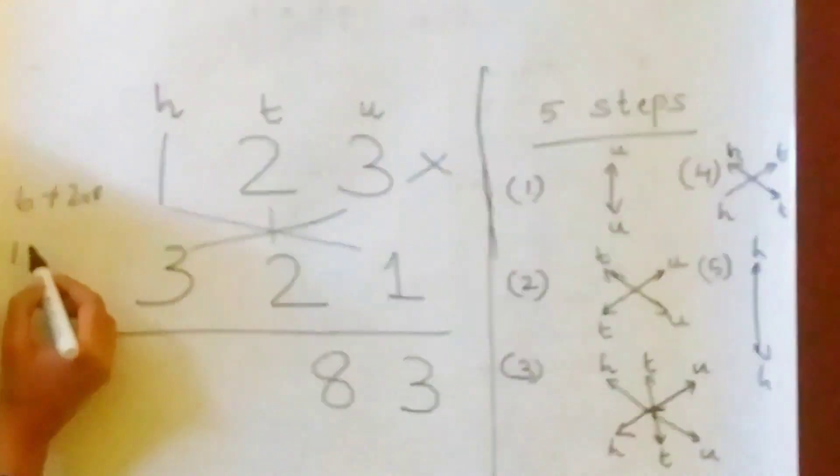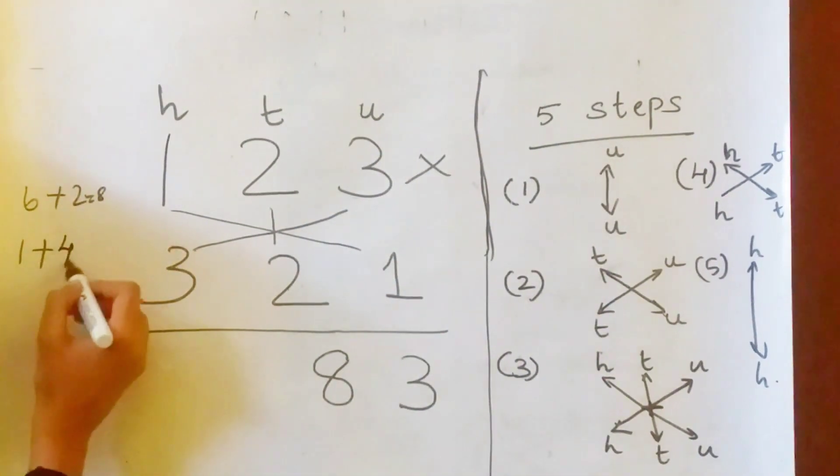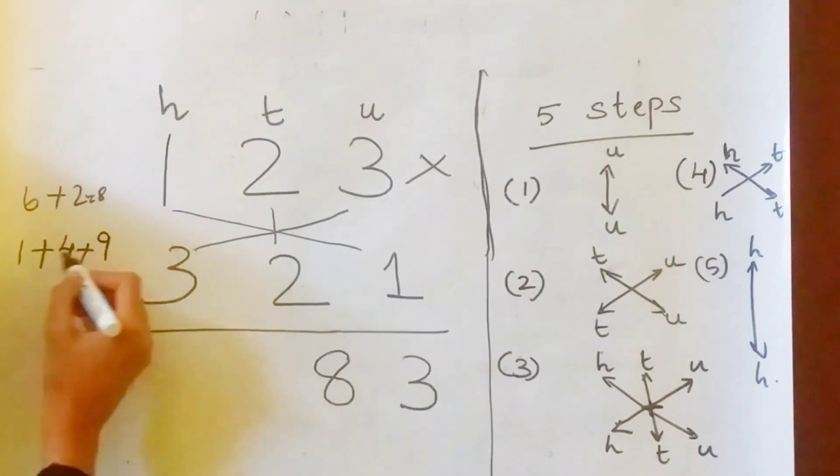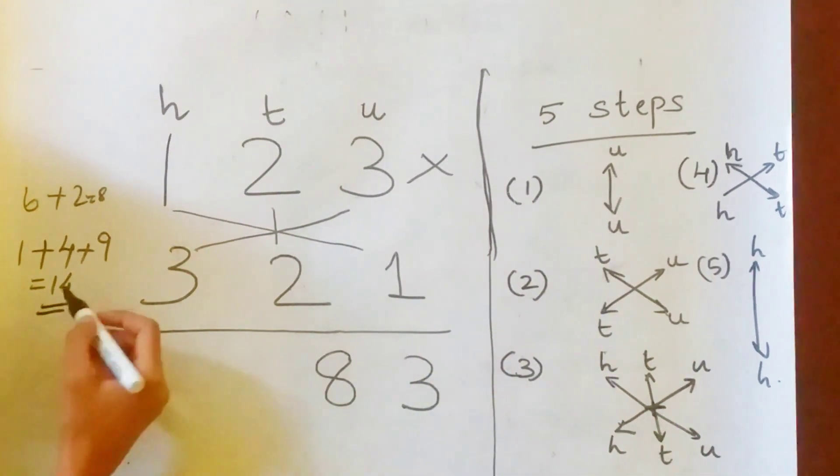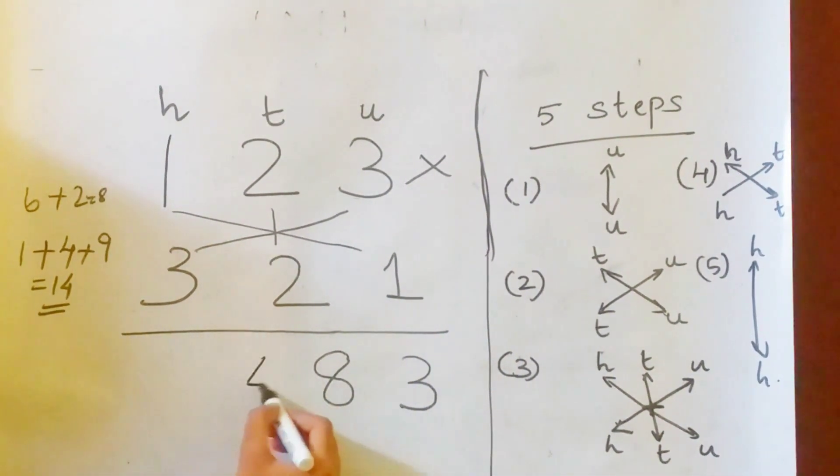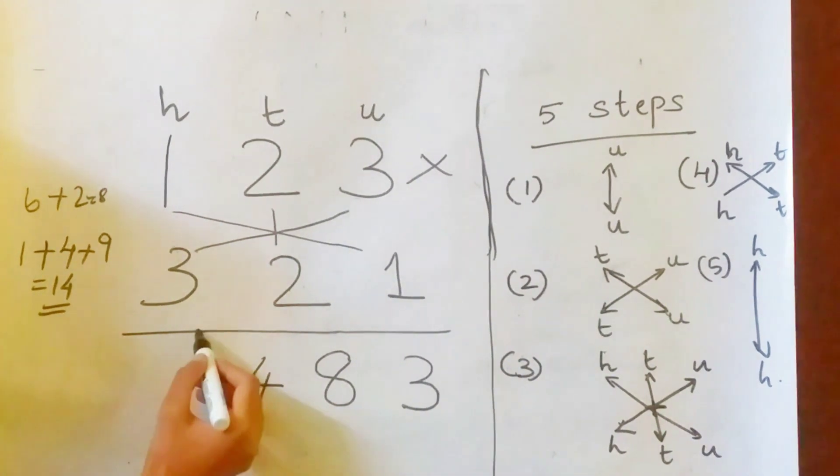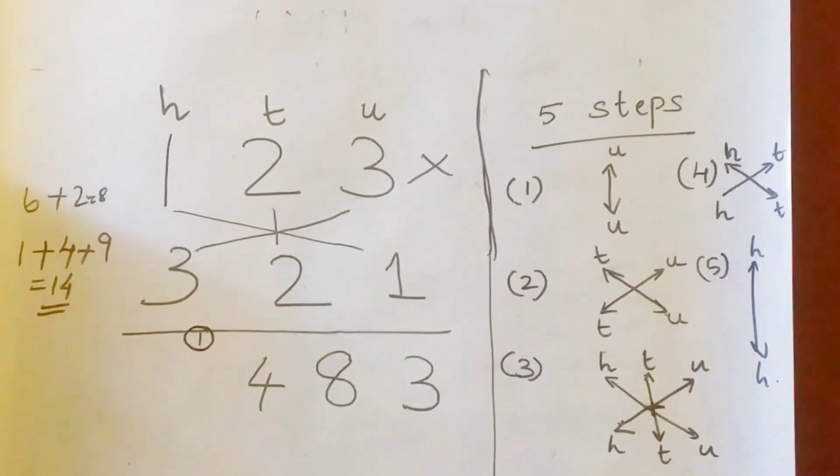So 1 into 1, 1 plus 2 into 2, 4 plus 3 into 3, 9. So the answer is 14. Don't write 14 here. Write only the units place that is 4. 1 will be a carry to the next number.